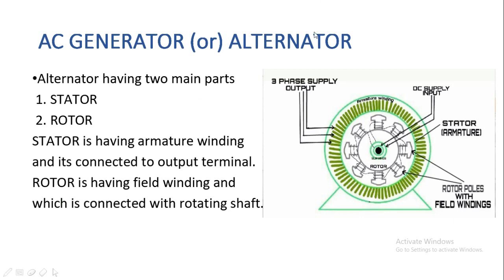Looking at the alternator or AC generator construction diagram, there are two main parts: one is called the stator and the other is called the rotor. The stator has the armature winding, which is connected to the output terminal. As seen in the construction diagram, the outer part is the stator carrying the armature winding. The rotor is the rotating part and carries the field winding of the generator.